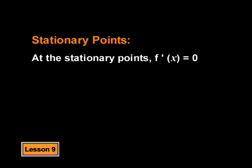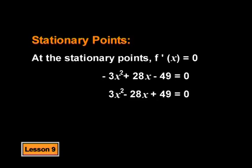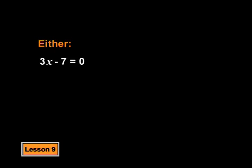At the stationary point, f dashed of x equals 0, which means that negative 3x squared plus 28x minus 49 equals 0. Dividing by negative 1 gives 3x squared minus 28x plus 49 equals 0. We can factorise this as 3x minus 7 times x minus 7 equals 0. That means either x equals 7 over 3 or x equals 7.